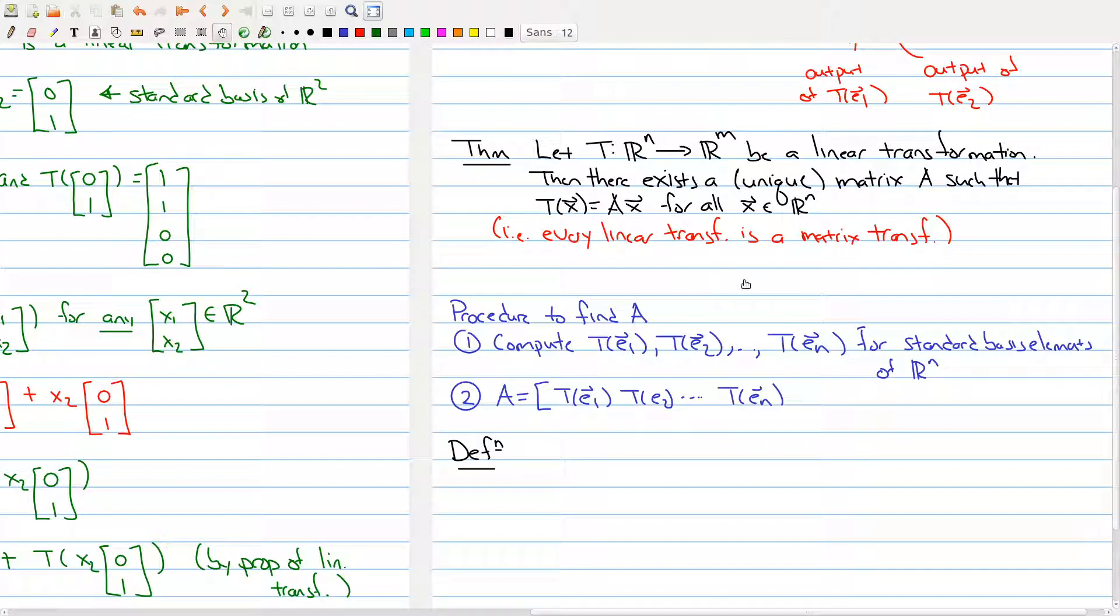So this is actually the procedure to find the matrix A in this theorem. So our procedure to find A is you're given a linear transformation and you compute the linear transformation for each of the n standard basis vectors. We're assuming that your domain is Rn. And given those outputs, those become your columns of the matrix A. And now this matrix A has a special name. So A is called the standard matrix for the linear transformation T.